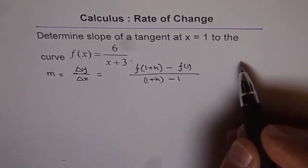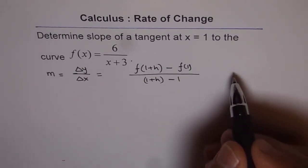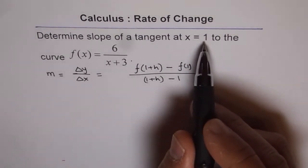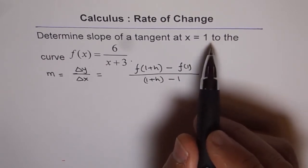So, the line joining them will give us slope of the secant. But, if this h is very, very close to 1, in that case, the slope of the secant will approach the slope of the tangent.